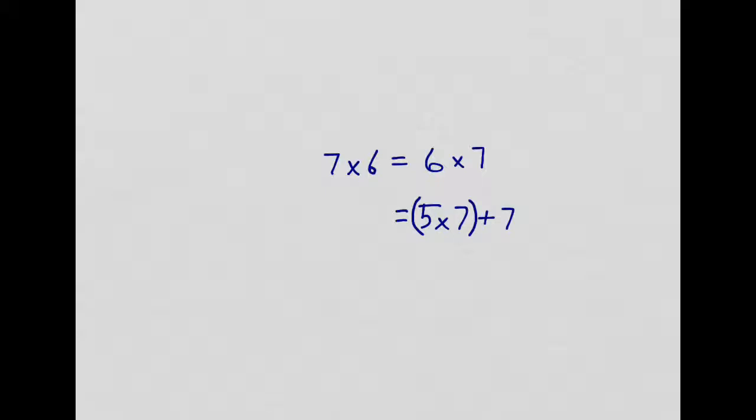Now, 5 times 7 is 5 sevens, or 7 fives. And I'm going to count by 5s, not count by 7s, to make this easy. Count along with me. I'm going to count up 7 fives. 5, 10, 15, 20, 25, 30, 35.